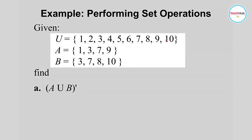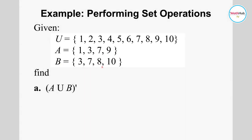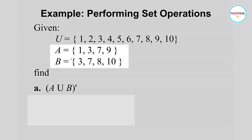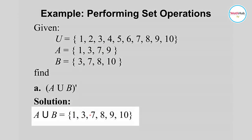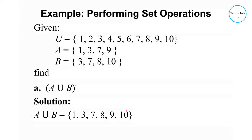The universal set contains all the sets under consideration. Set A contains 1, 3, 7, and 9, and set B contains 3, 7, 8, and 10. To get the union of these two sets, we gather or combine all the elements from both sets, listing common elements only once. So we have 1, 3, 7, 8, 9, and 10.